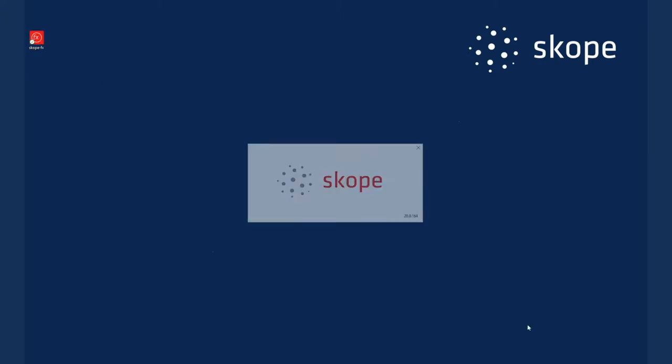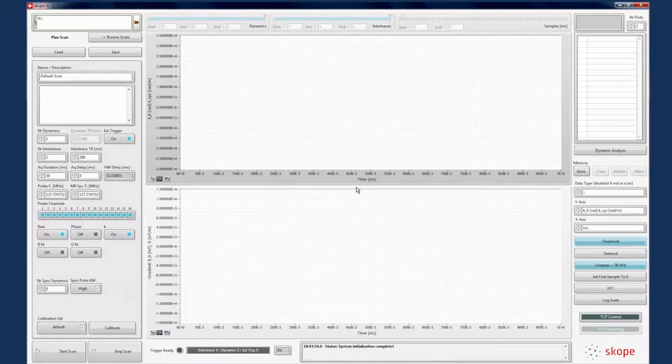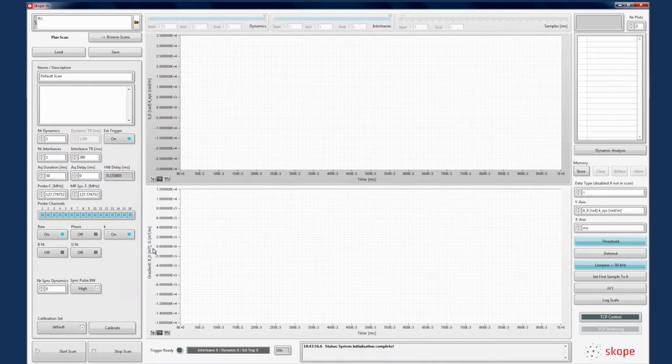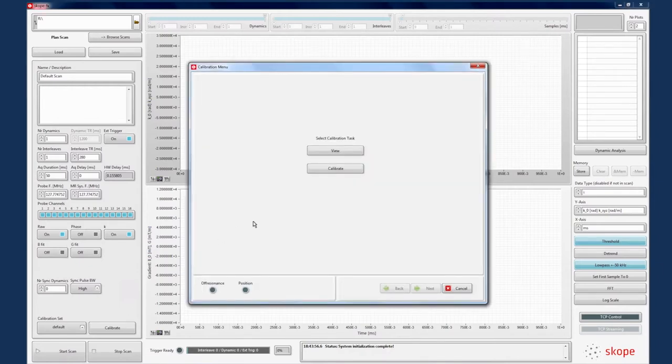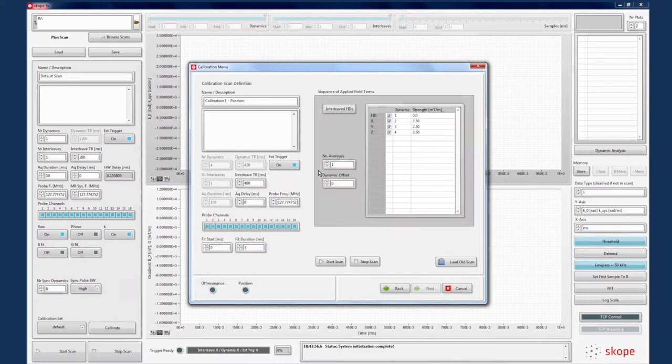From the acquisition system side, calibration is started by launching Scope FX, the software responsible for operating the acquisition system and interpreting the results. By pressing calibrate, the calibration window pops up. Here we choose to do a new calibration which then allows us to set the parameters to match a specific calibration sequence. We then press start scan and wait until the system is ready.